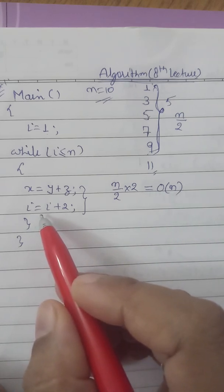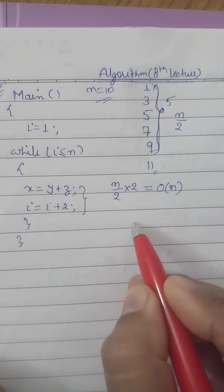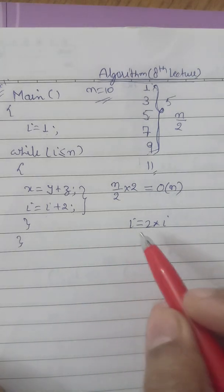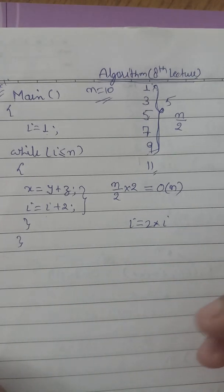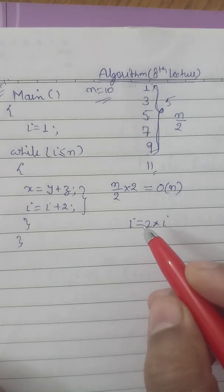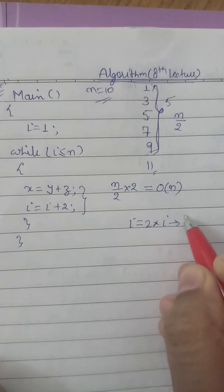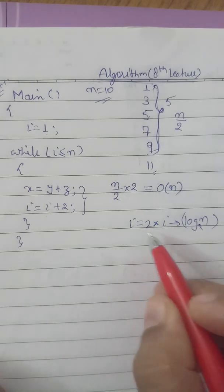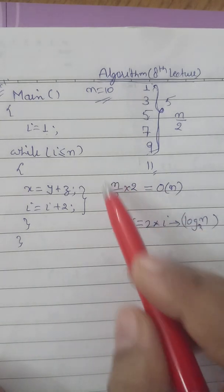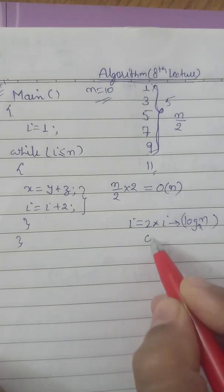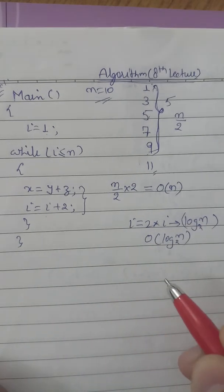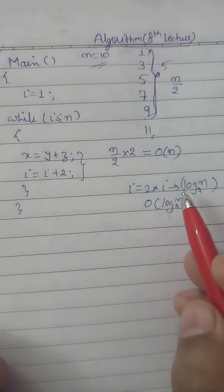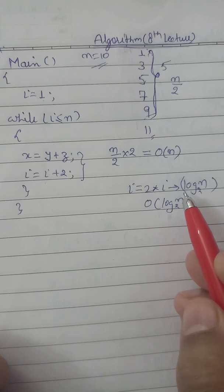In a similar way, if instead of i equals i plus 2 we have i equals 2 into i, as we have seen in the last lecture, whenever i equals 2 into i, we get log n value base 2. So if we have i equals 2 into i, the time complexity will be O(log n base 2).